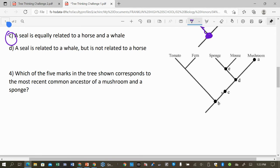How about the next? Which of the five marks in the tree shown corresponds to the most recent common ancestor of a mushroom and a sponge. So here's a mushroom, here's a sponge. Go back in time until they meet. The answer here is D.